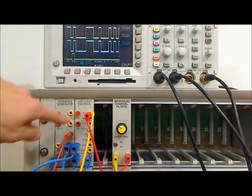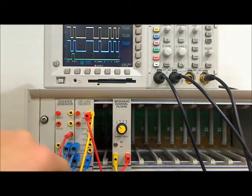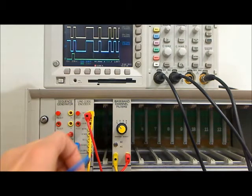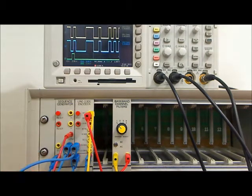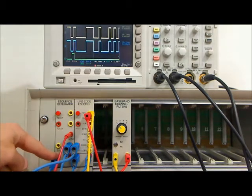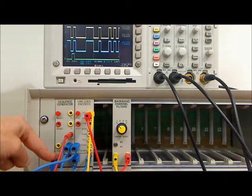Here we have the line code encoder, which is clocked by 8kHz from the master signals. We take the 2kHz bit clock out of the line code encoder and use it as the bit clock for the sequence generator. The bit rate is therefore 2kbps.